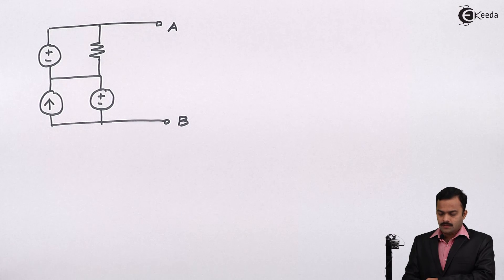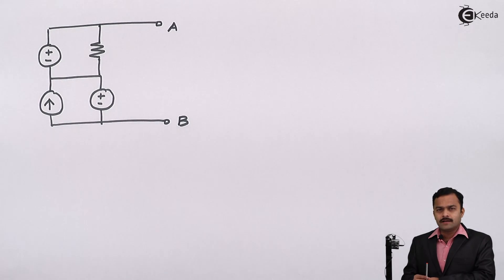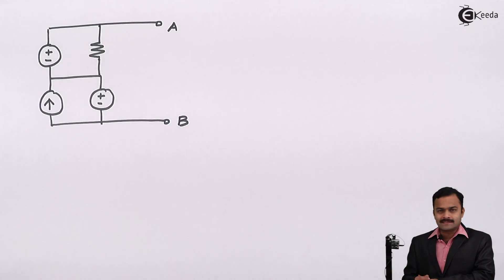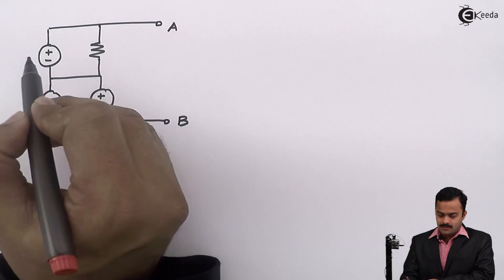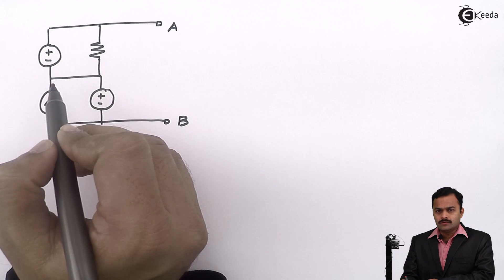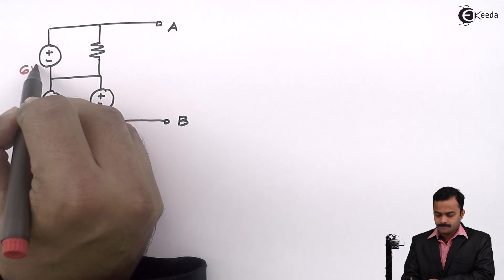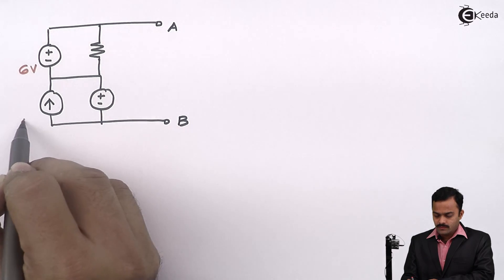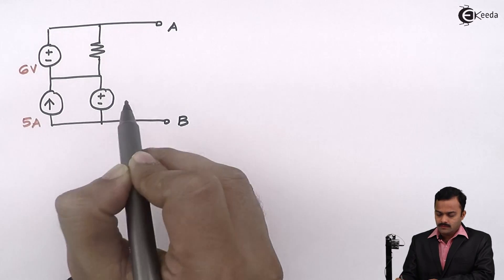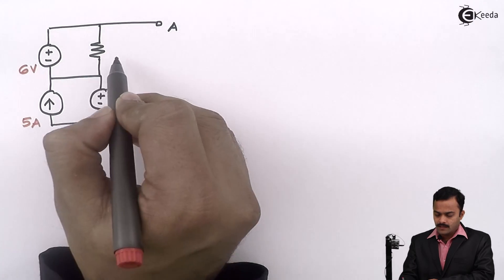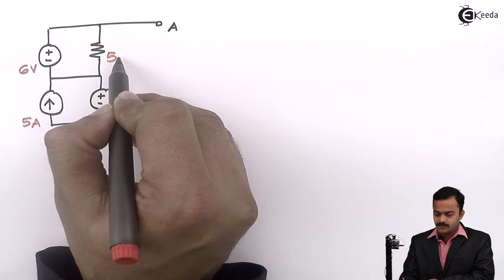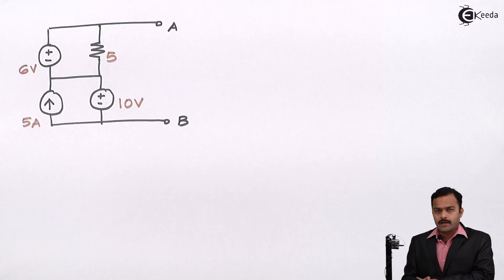Here we have taken a problem where sources are more but only one resistance is present. Let's have the values for these sources. This voltage source is 6V, this current source 5A, voltage source of 10V, and only resistance present of 5 ohms.